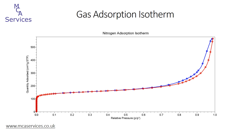The isotherm on screen at the moment is of a zeolite sample. The adsorption isotherm is shown in red and the desorption isotherm is shown in blue. When we're collecting full isotherms it's actually very common to also measure the desorption isotherm, and that's really important as it can give us a lot of information not just on the pore size but also the shape of the pores present within the sample.